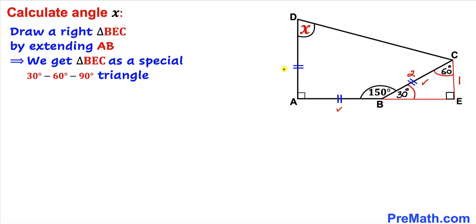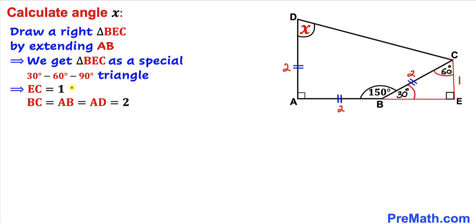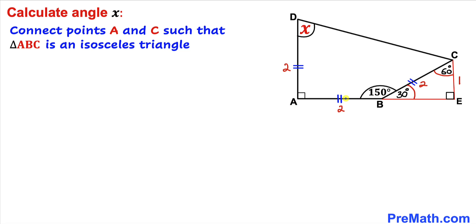We know that side lengths BC, AB, and AD are equal in length. So if BC is 2 units, then AB is 2 units and AD is 2 units as well. Therefore EC equals 1, and BC, AB, and AD each equal 2 units.